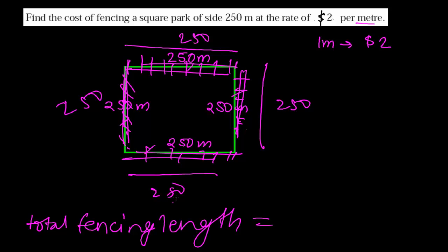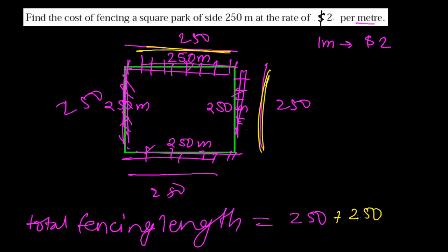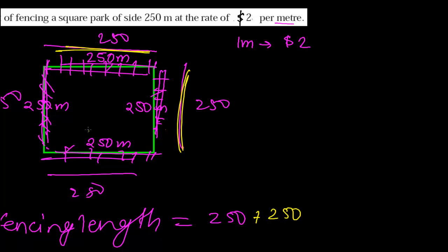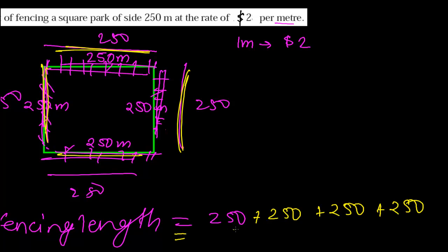So the total fencing length — you can call this the perimeter — is four times 250. That is: 250 + 250 + 250 + 250 meters. Altogether we have 1000 meters to fence.